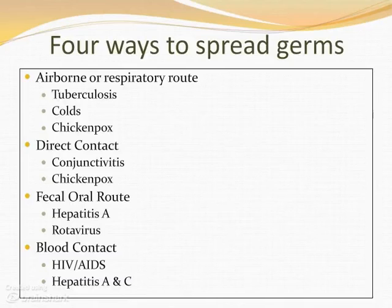The fourth way to spread germs is through blood contact. The individual must come in contact with infected blood or body fluids. Some things spread this way are HIV/AIDS, hepatitis B, and hepatitis C.